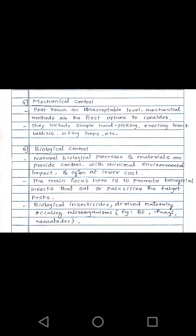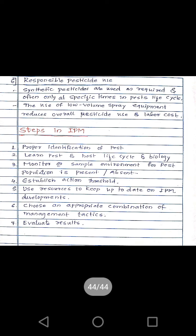The sixth principle used in IPM is responsible pesticide use. Synthetic pesticides are used as required and often only at specific times in a pest life cycle. Only at a particular time during the particular pest life cycle will these synthetic pesticides be used to kill the pest or reduce the population of the pest. The use of low-volume spray equipment reduces the overall pesticide use and the labor cost.